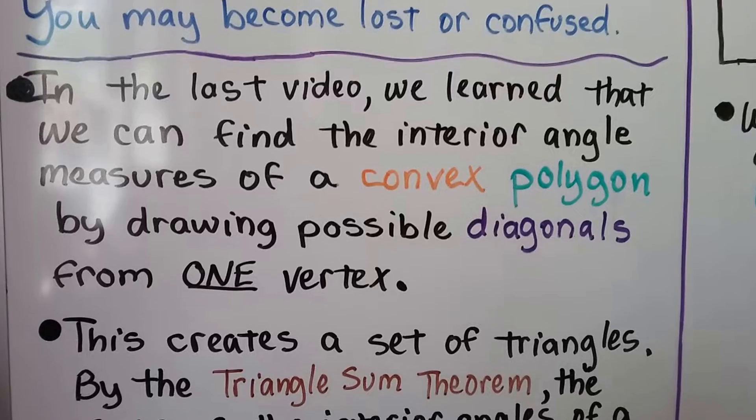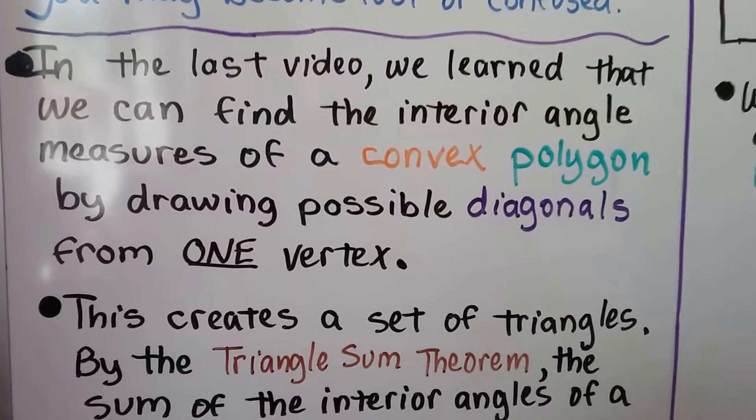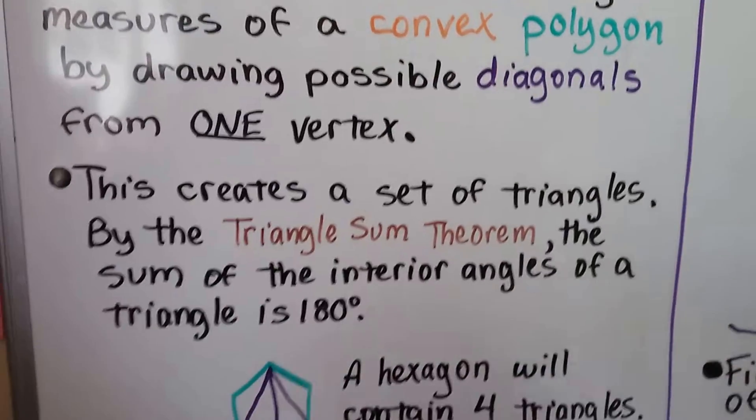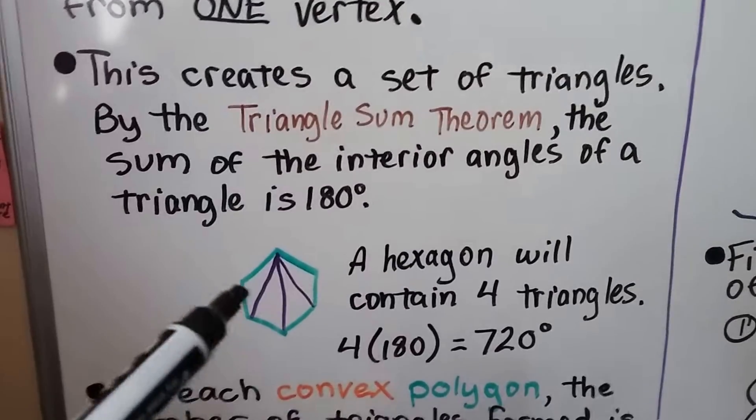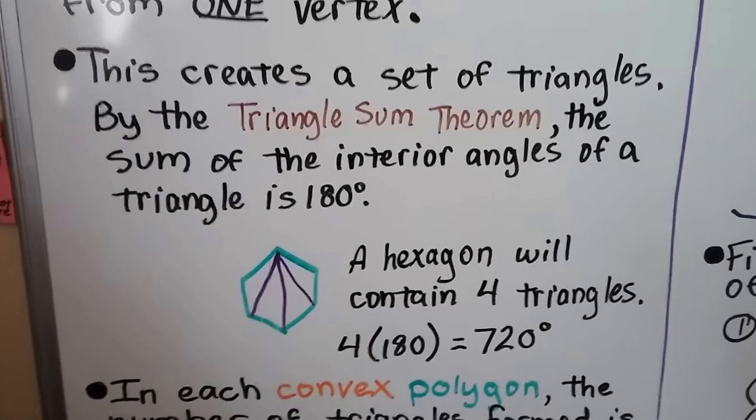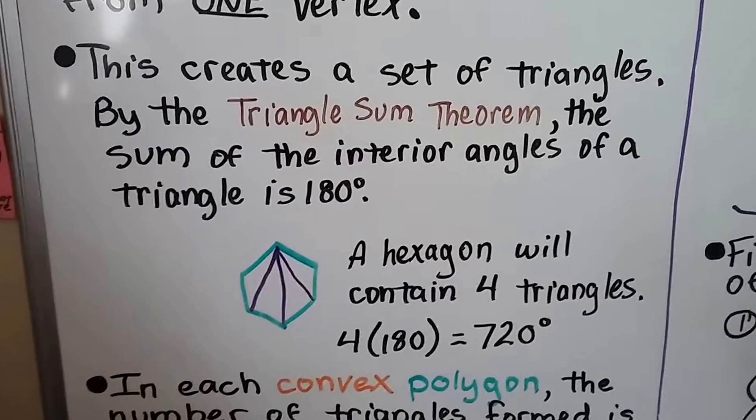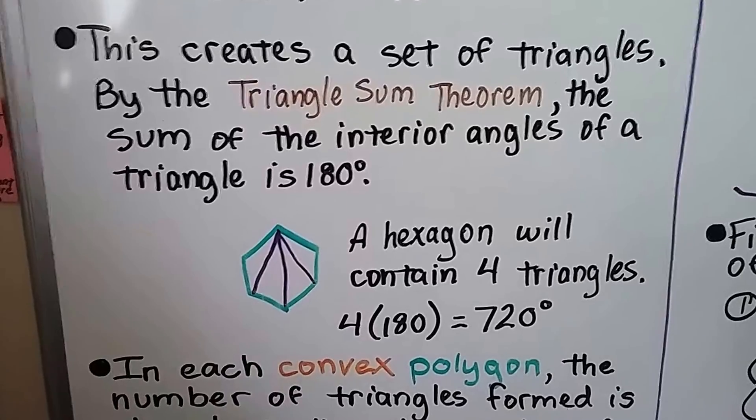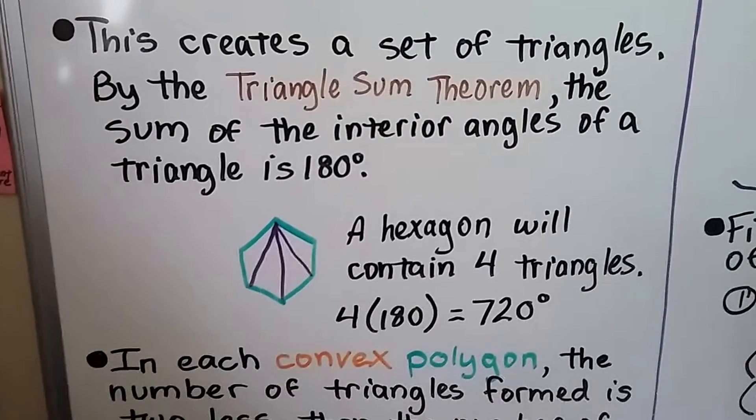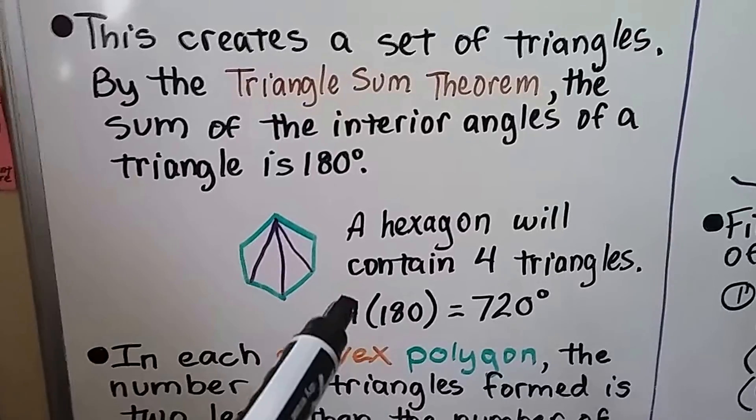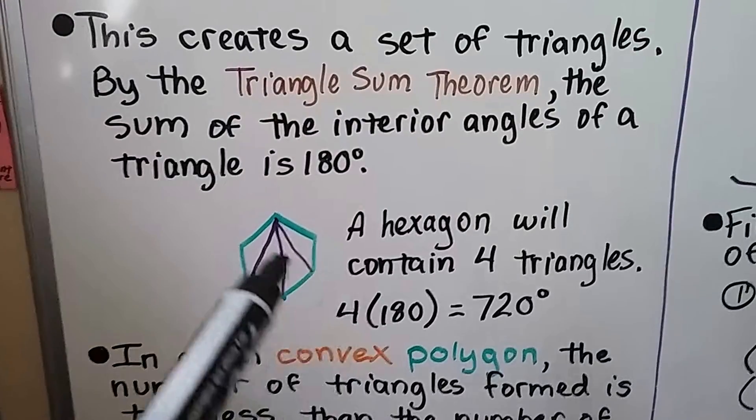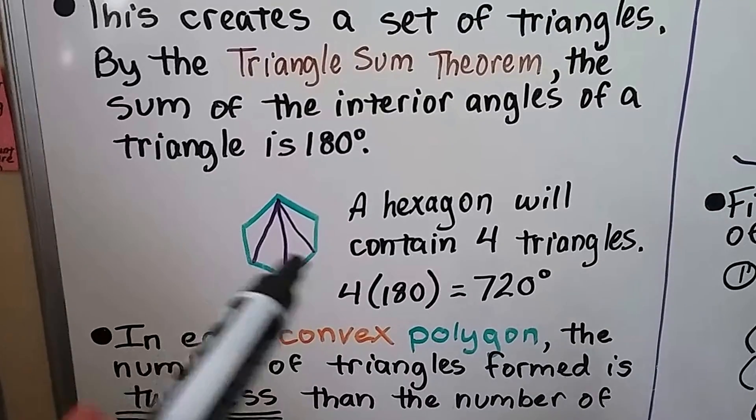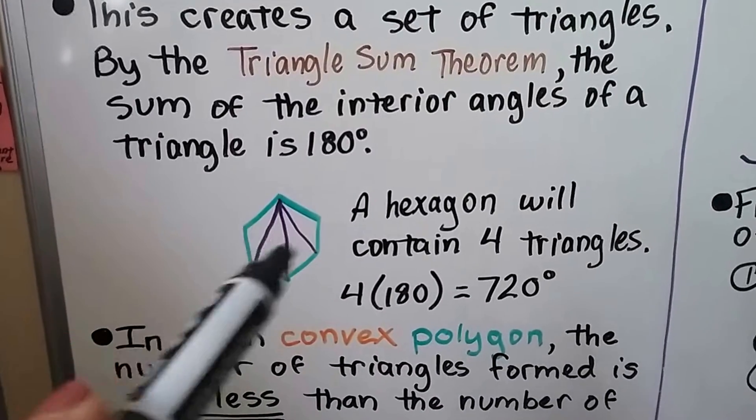In the last video we learned that we can find the interior angle measures of a convex polygon by drawing possible diagonals from one vertex. This creates a set of triangles, and by the triangle sum theorem the sum of the interior angles of a triangle is 180 degrees. A hexagon with six sides will contain four triangles. We multiply 4 times 180 for each of the degrees of the triangle and get 720 degrees for the interior angle measures of a hexagon.